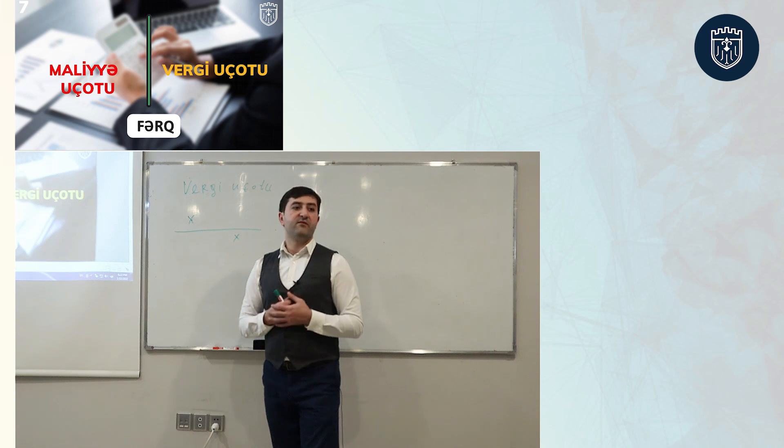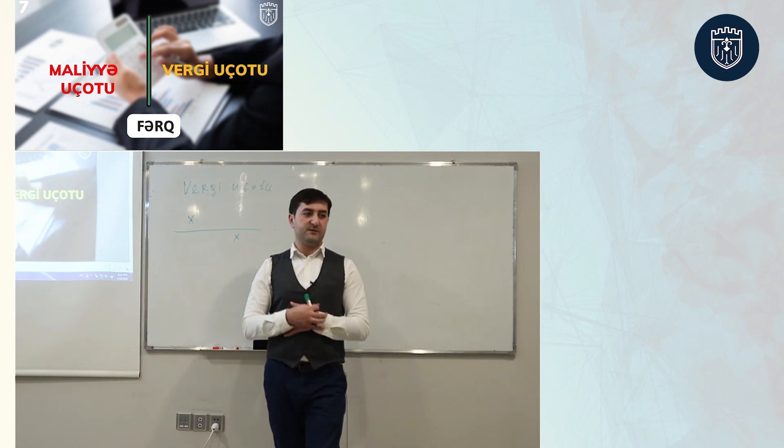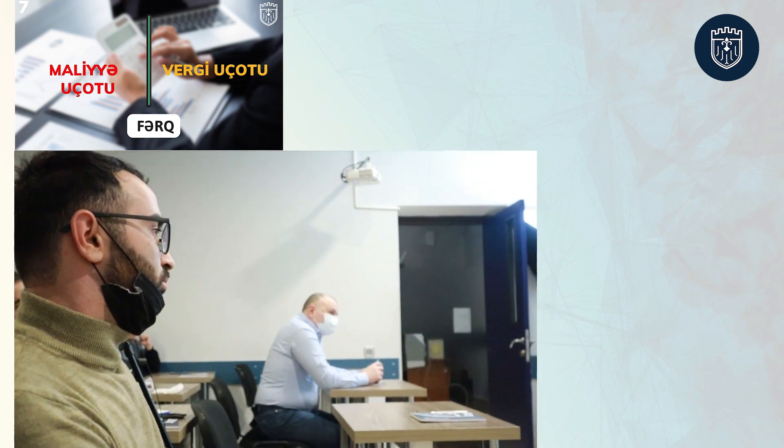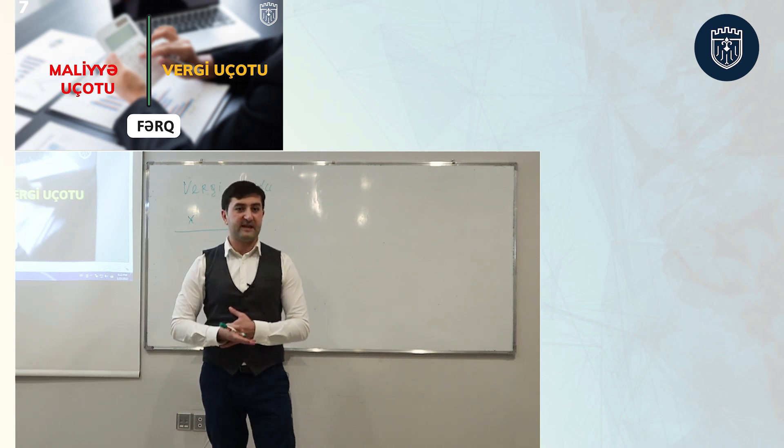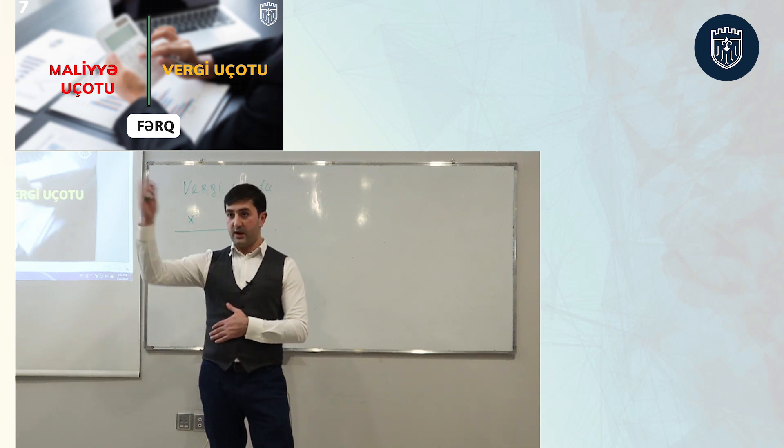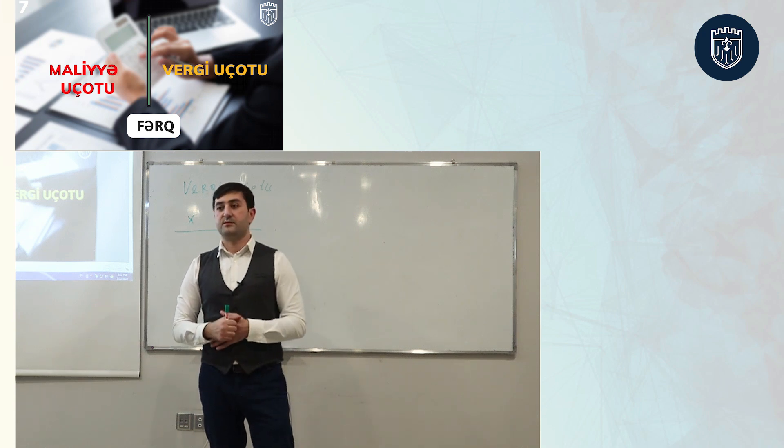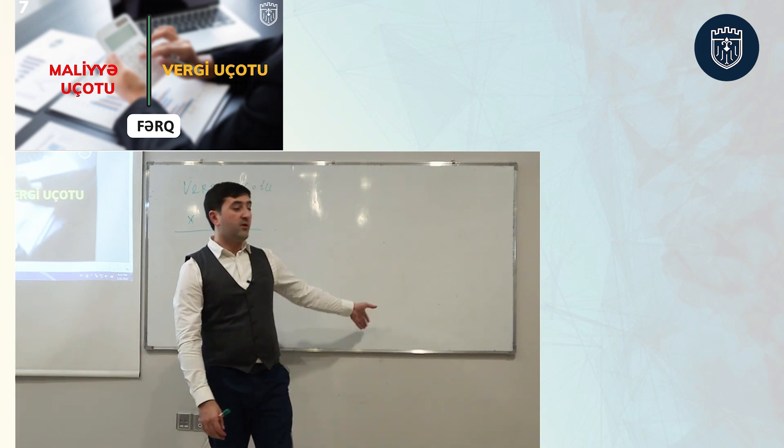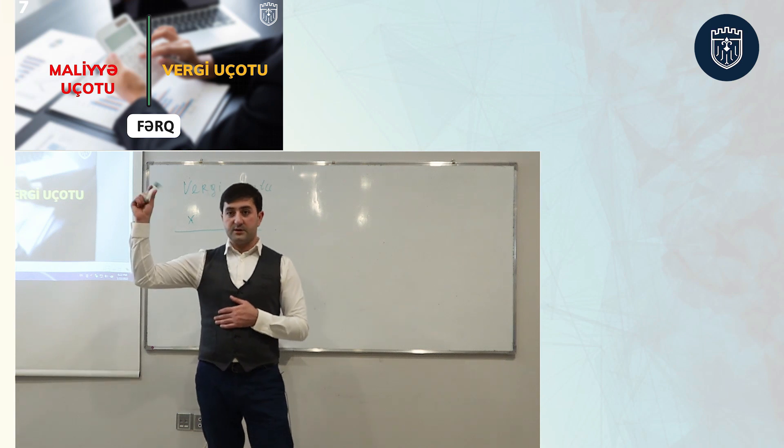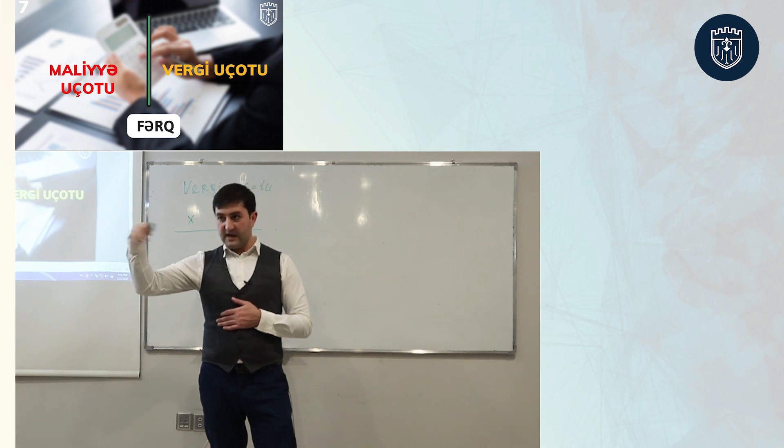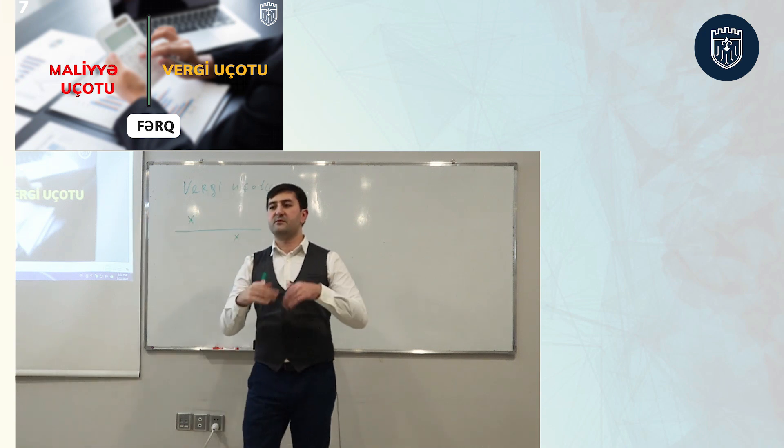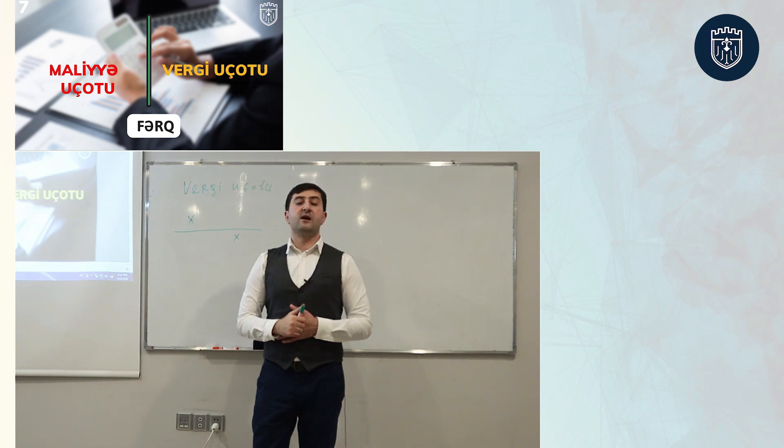Vergi uçotu yanaşması düz xəttdir. Vergi məcəlləsində nə yazılıbsa, nə qeyd olunubsa ona uyğun olaraq mühasibatlığın aparılması. Bu xəttdən yayındığın təqdirdə güllələnmə. Vergi məcəlləsində qeyd olunub ki əsas vəsait bir ildən çox istifadə olunmalı, dəyəri 500 manatdan çox olmalıdır. Mənim fəaliyyət sahəm təlimçilikdir. Mənə lazım olan aktivlər hansılardır?